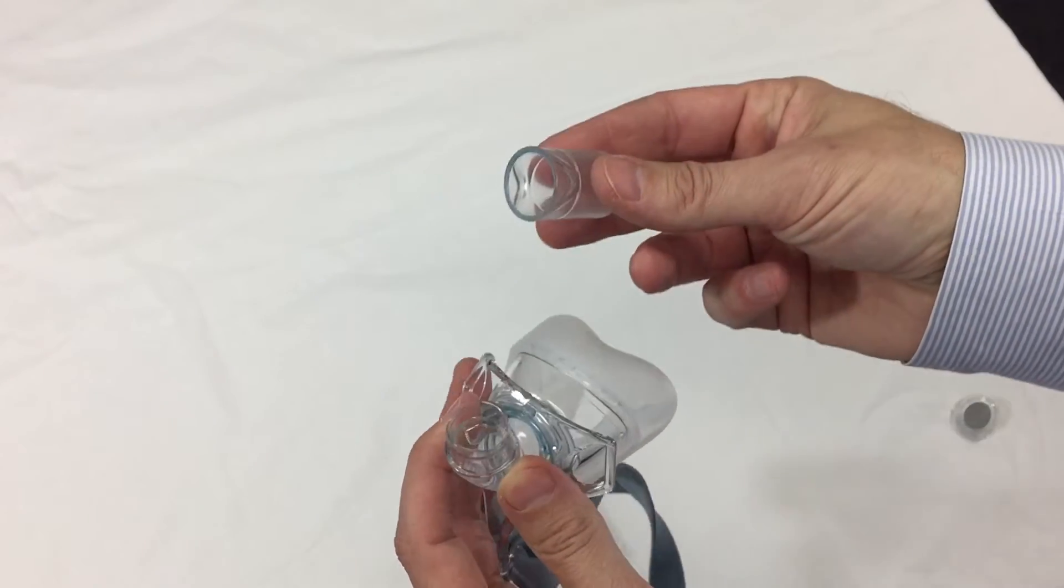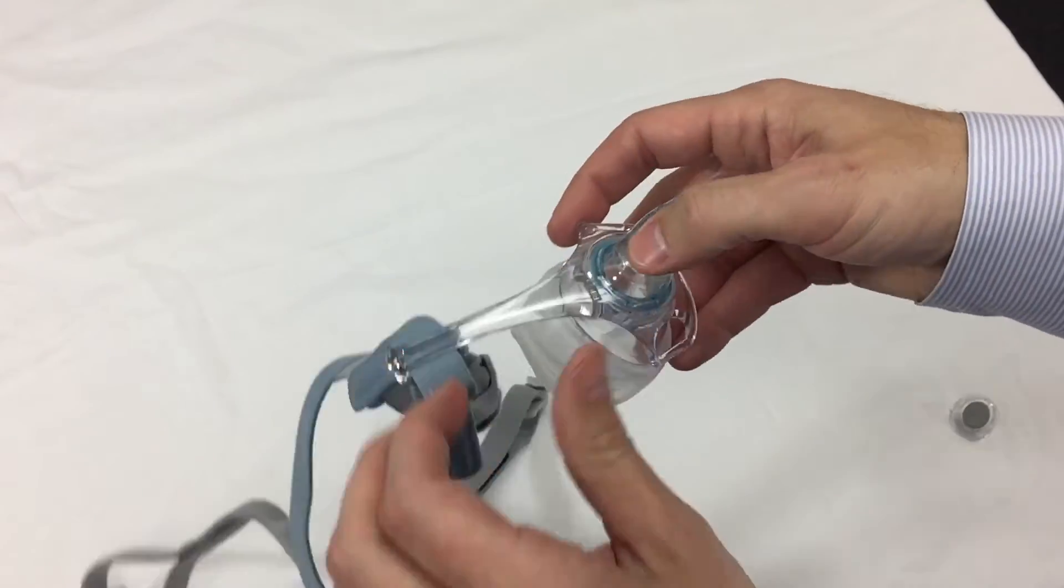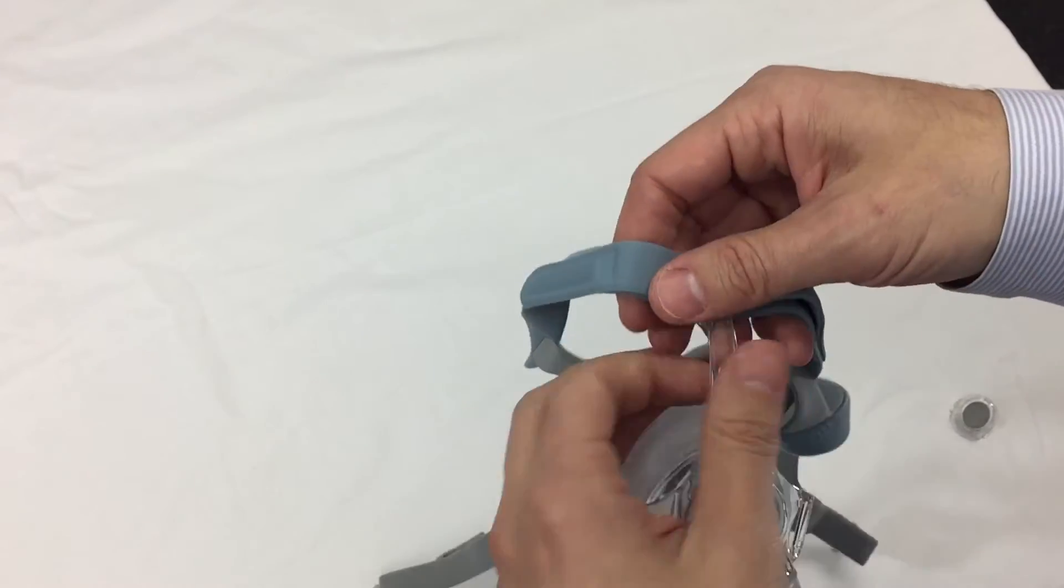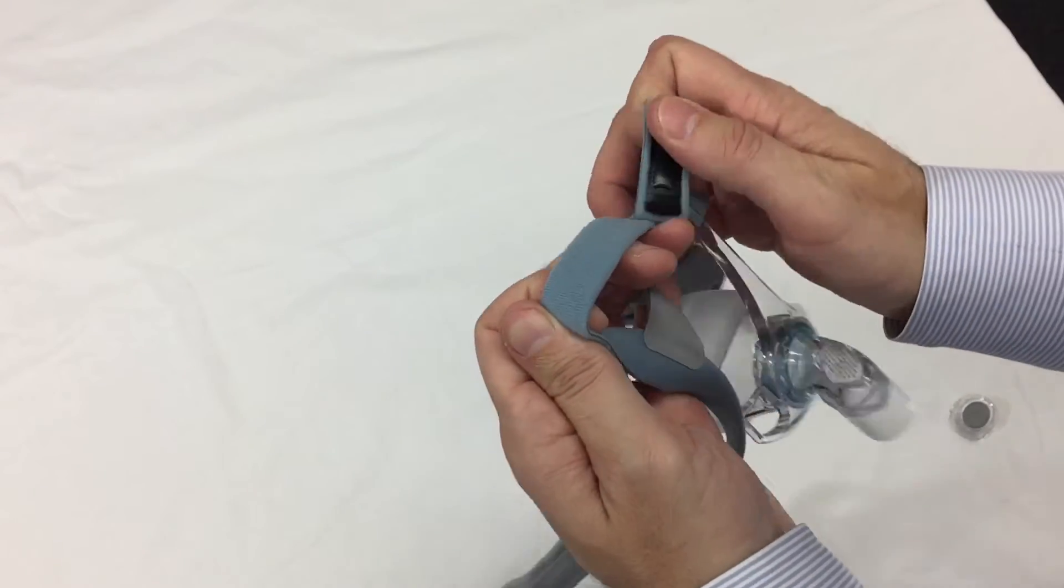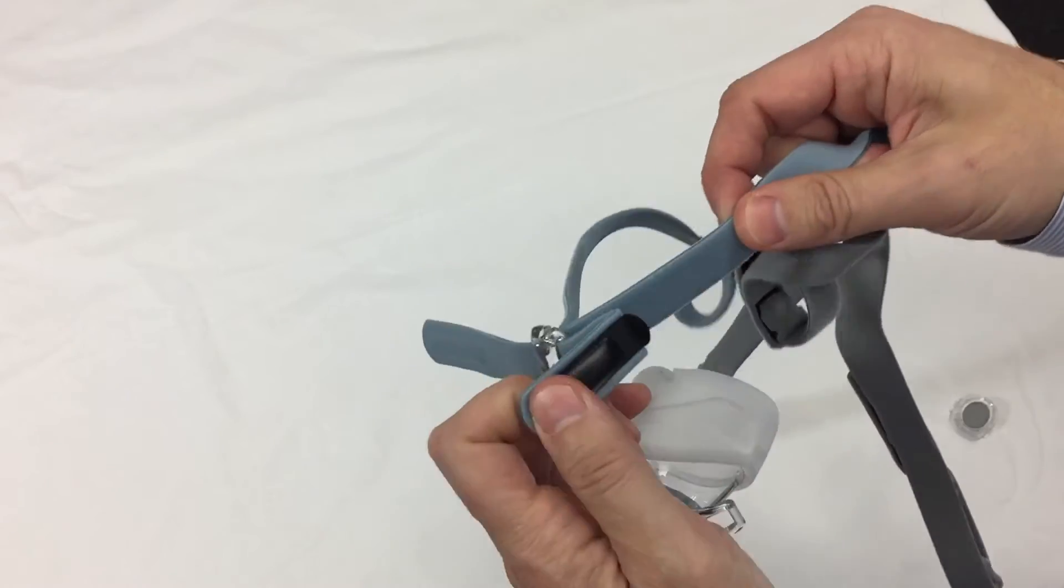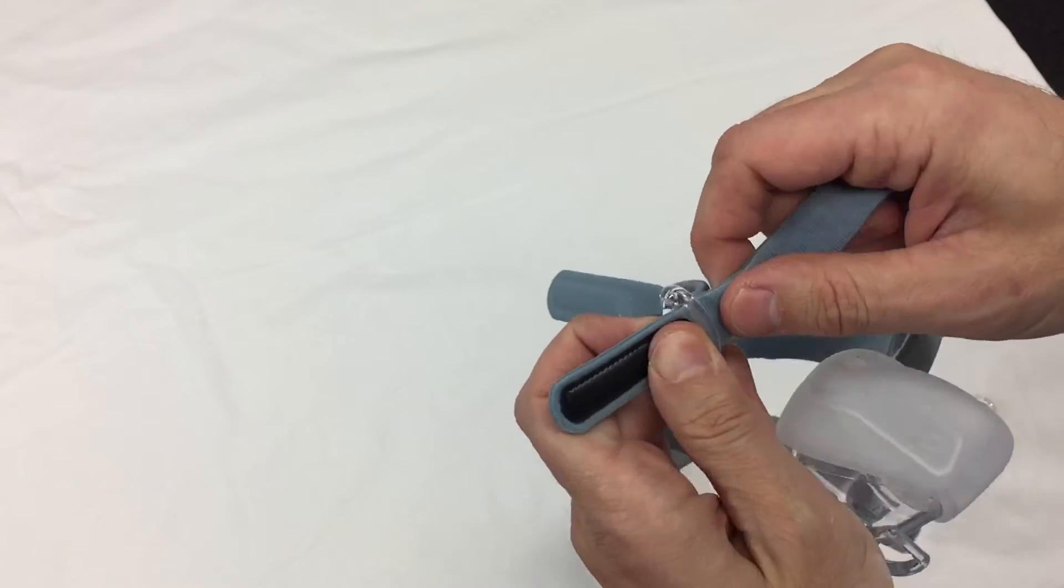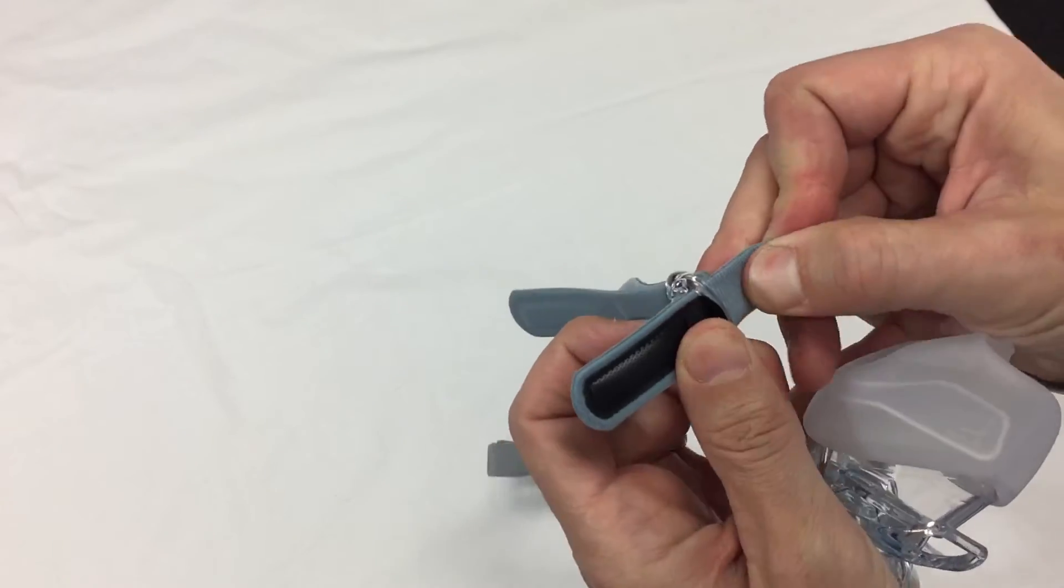And the elbow pops off. And that spins around. This mask will work with any CPAP or BiPAP or VPAP machine by any manufacturer. And it will connect to regular standard tubing or heated tubing. Works with anything.